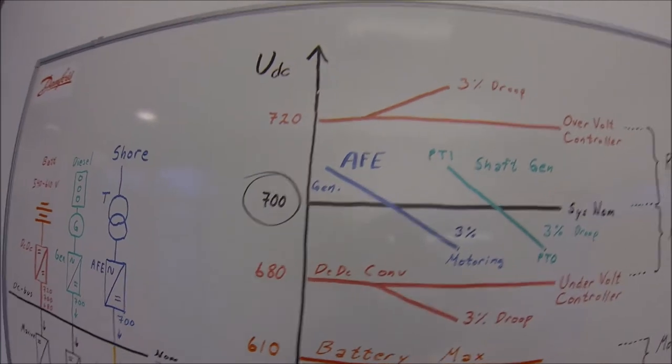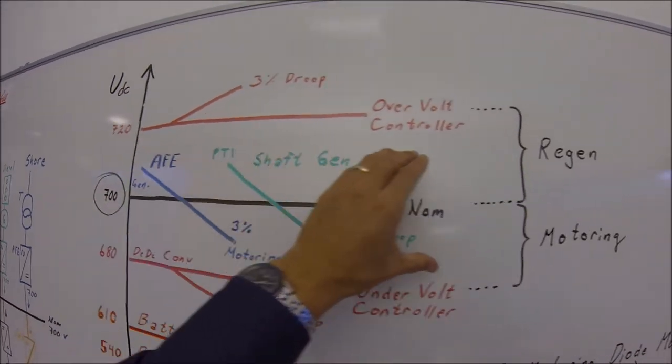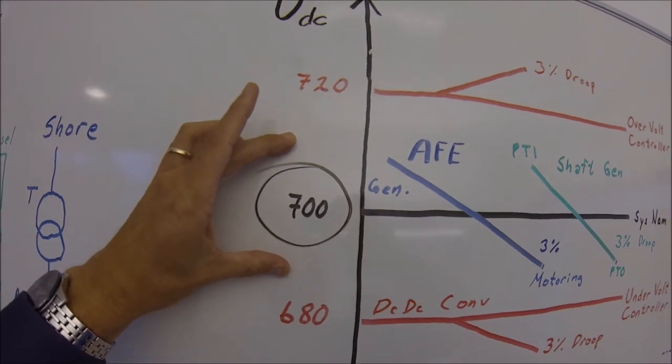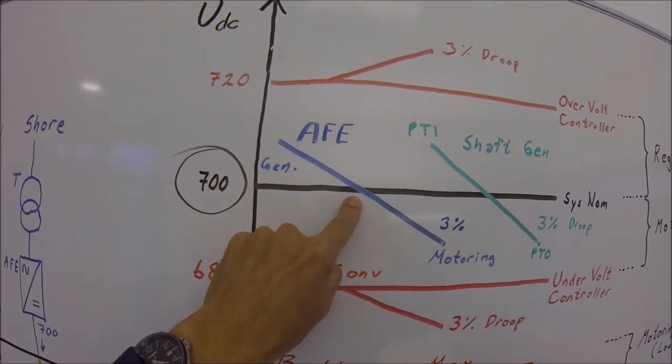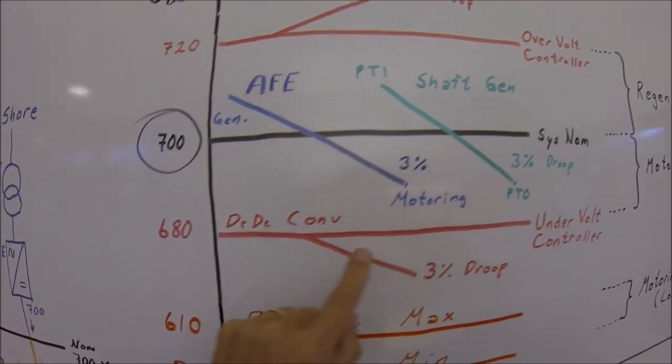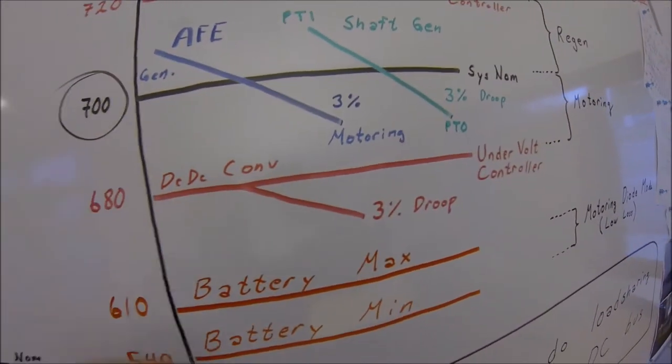This works like this. The active front end and the generator application is working around its nominal voltage 700. Let's say this one is overloaded or turned off, overloaded or turned off. Okay, then it comes down to the battery.